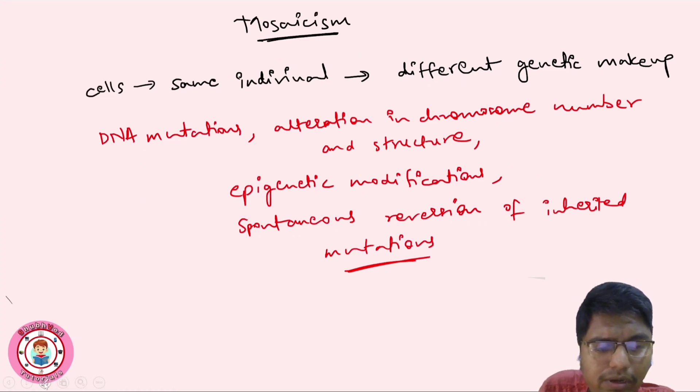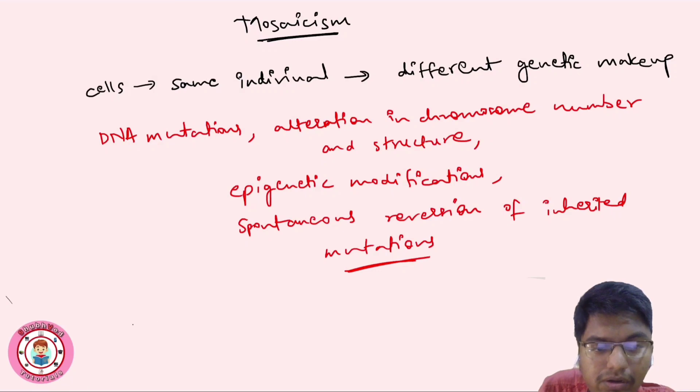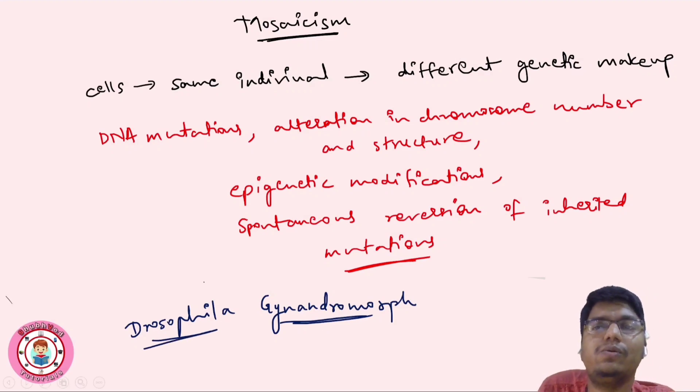Previously, we have talked about Drosophila gynandromorph. I will attach the video in the eye button. If you want to know in detail, do watch that. Drosophila gynandromorph, this is basically an example of mosaicism.